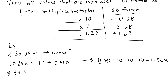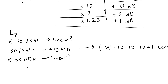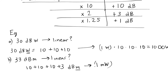Now let's take 33 dBm — a different unit. 33 dBm equals 10 + 10 + 10 + 3 dB. The unit of milliwatts is what the 'm' means. So I take 1 milliwatt and multiply by 10 by 10 by 10, then multiply by 2 because that 3 dB additive term corresponds to multiplying by 2. That gives 2000 milliwatts. Since a milliwatt is 10⁻³ watts, this converts to 2 watts.